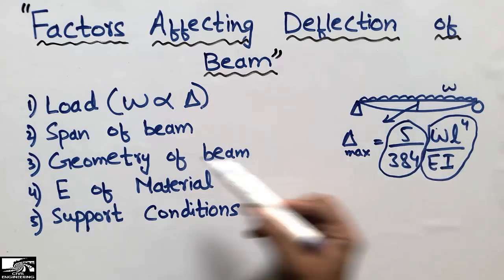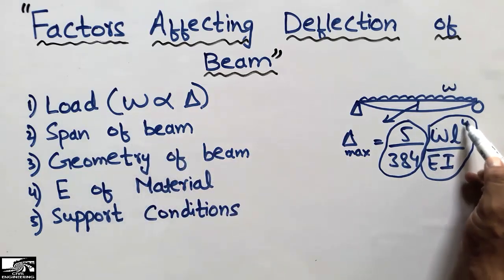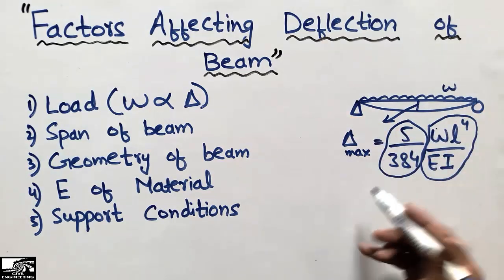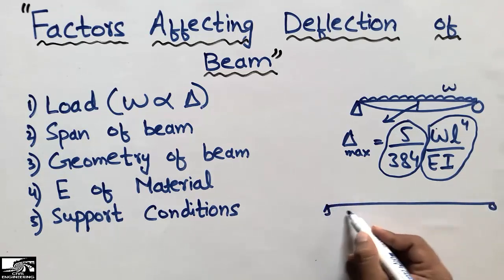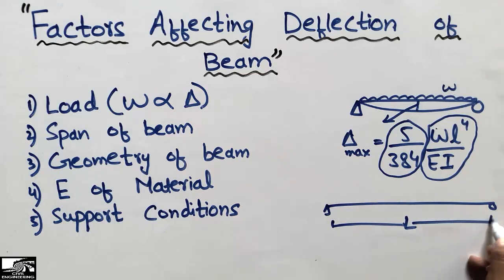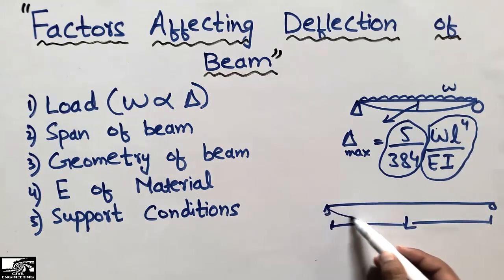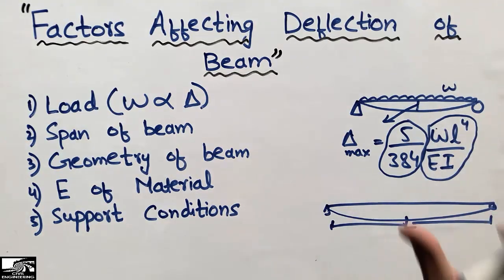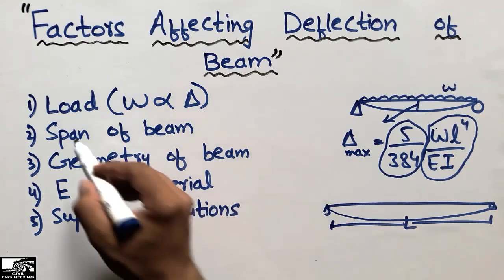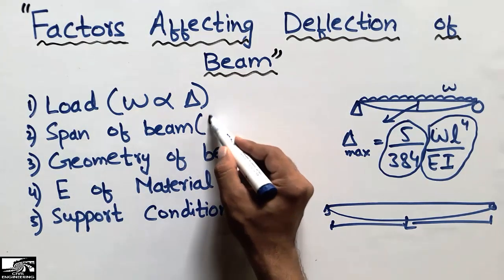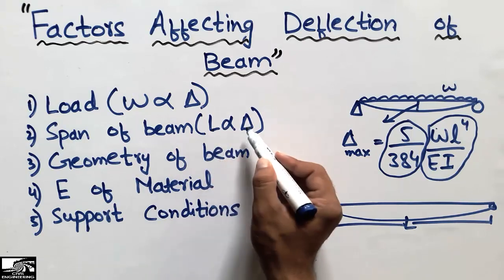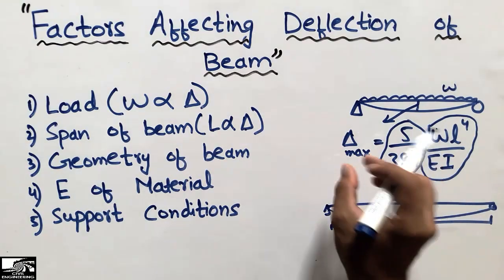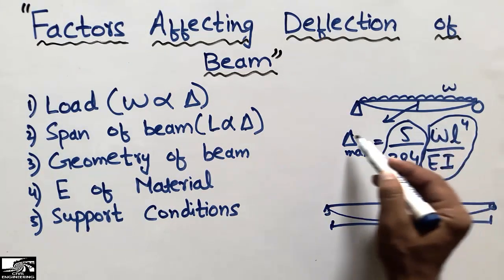The second factor is the span of the beam — the length L, which appears as L⁴ in the formula. If we have a longer beam compared to a shorter one under the same loading conditions, the longer beam will have more deflection. So the length of the beam has a direct relation with deflection: the smaller the length, the smaller the deflection; the greater the length, the greater the deflection.